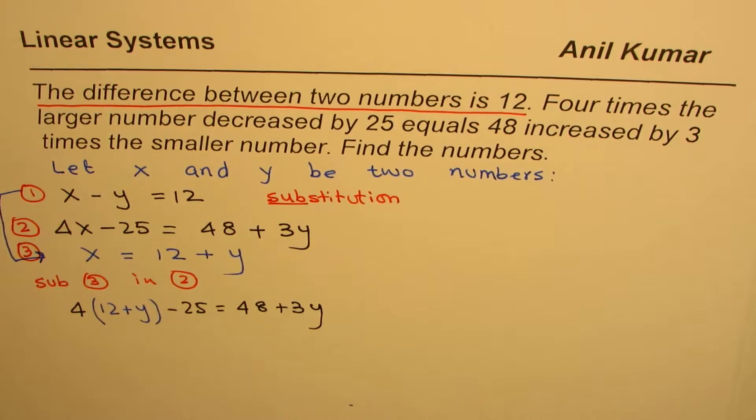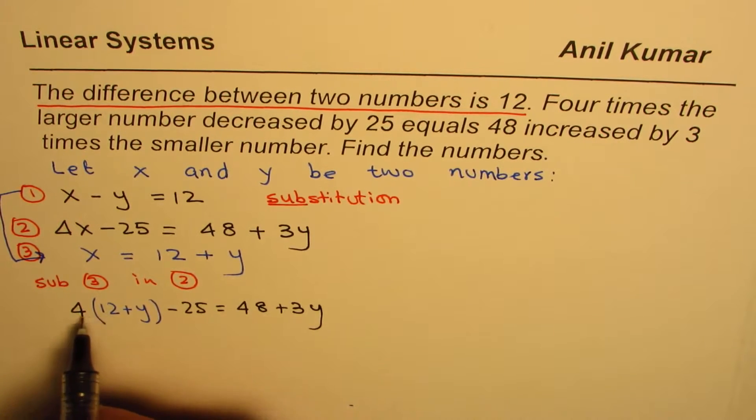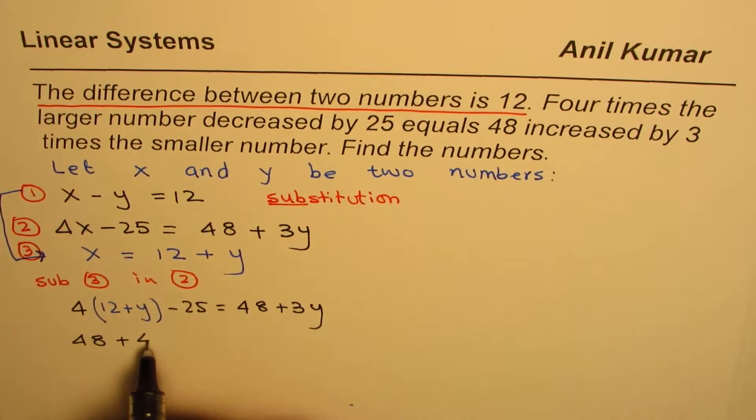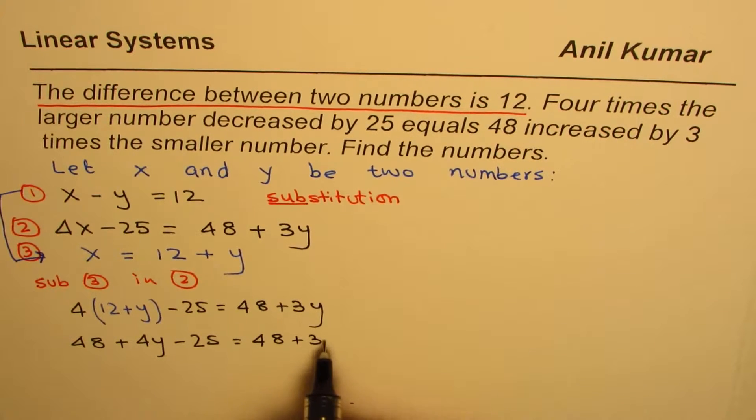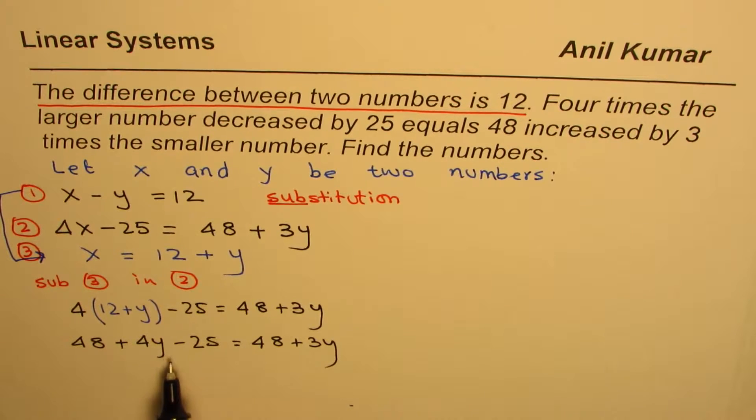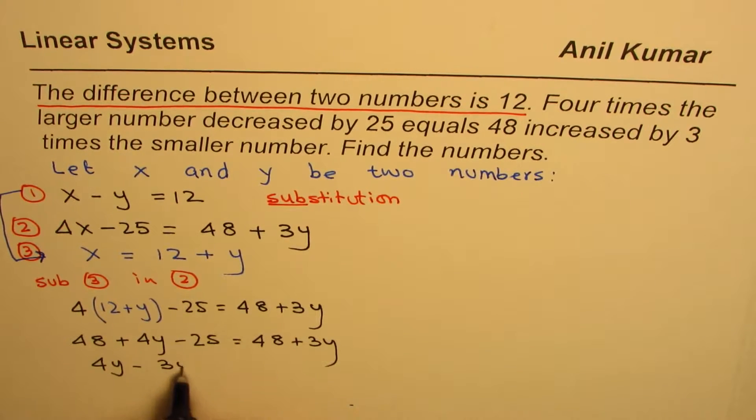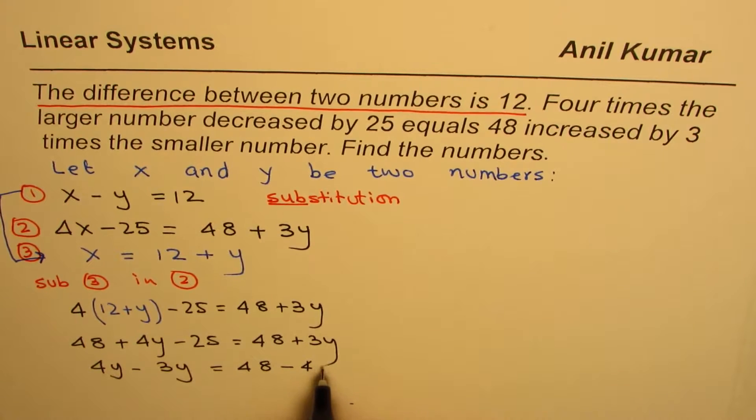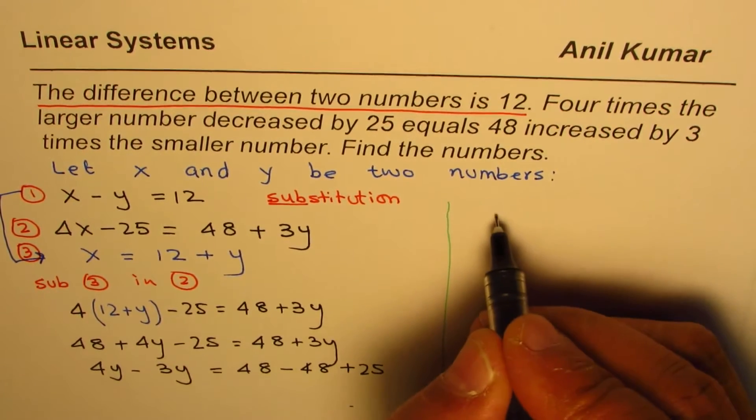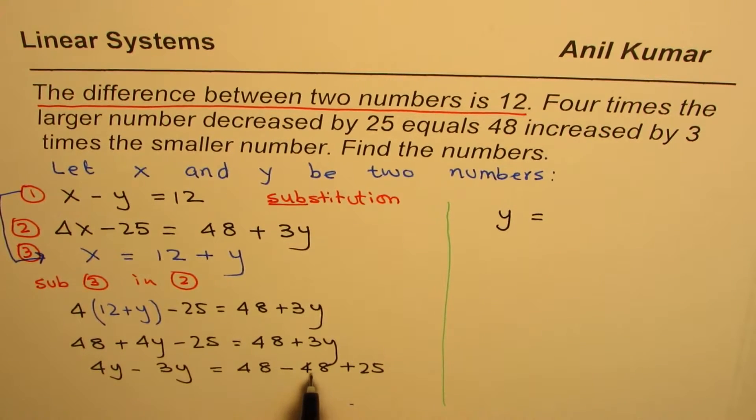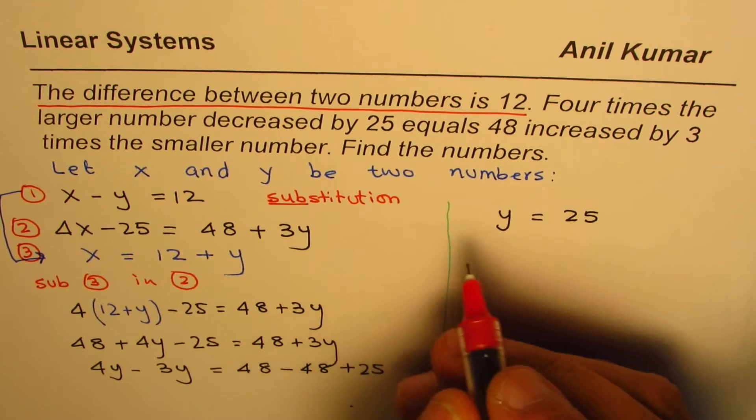4 times 12, using the distributive property, is 48 plus 4Y, minus 25 equals 48 plus 3Y. To solve, we bring variables together and constants on the other side. 4Y minus 3Y equals 48 minus 48 plus 25. So Y equals 25. We'll call this equation 4.